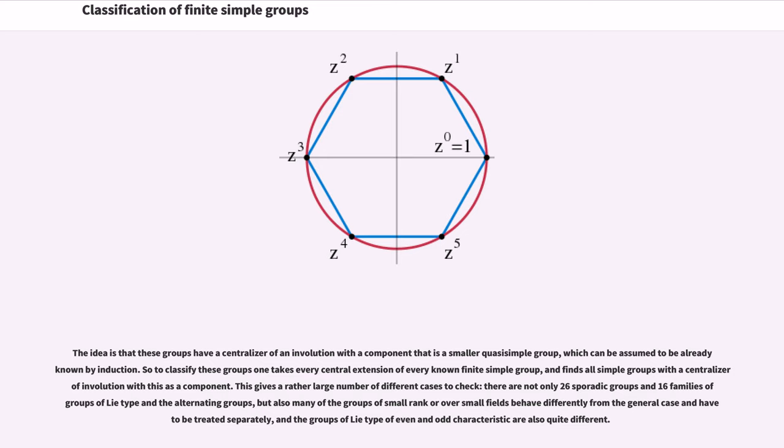The idea is that these groups have a centralizer of an involution with a component that is a smaller quasi-simple group, which can be assumed to be already known by induction. So to classify these groups, one takes every central extension of every known finite simple group and finds all simple groups with a centralizer of involution with this as a component. This gives a rather large number of different cases to check. There are not only 26 sporadic groups and 16 families of groups of Lie type and the alternating groups, but also many of the groups of small rank or over small fields behave differently from the general case and have to be treated separately.